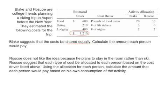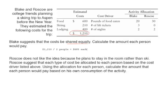Blake suggests the cost be shared equally. To do this, we take the total estimated cost and divide by the number of people, which is two. So each person would pay $605. However, Roscoe may not think this is fair because he plans to stay in the room and not ski. So Roscoe suggests each type of cost be allocated based on its cost driver — in other words, using activity based costing.